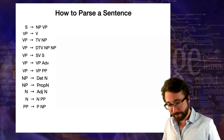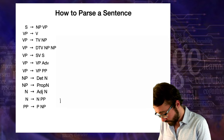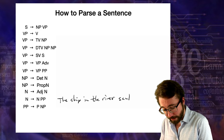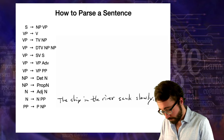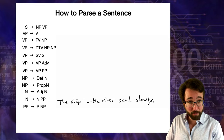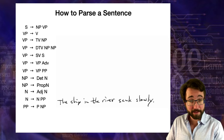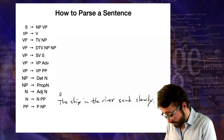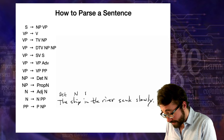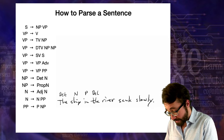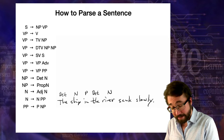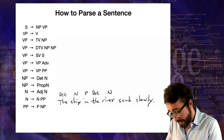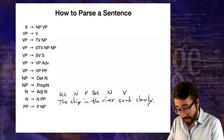Now a slightly more challenging example: 'The ship in the river sank slowly.' The syntactic categories are: 'the' is a determiner, 'ship' is a noun, 'in' is a preposition, 'the' is a determiner, 'river' is a noun, 'sank' is an intransitive verb V (no object), and 'slowly' is an adverb. Now let's parse. At the end we have V followed by ADV. That doesn't match any rule yet, so let's apply the rule that a VP can consist of an intransitive verb V.